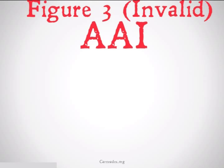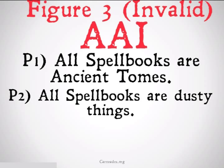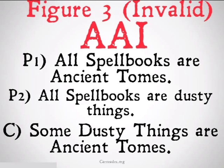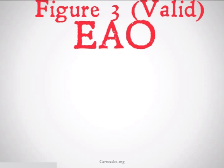An invalid version of AAI is: All spellbooks are ancient tomes. All spellbooks are dusty things. Therefore, some dusty things are ancient tomes. Why? Because real spellbooks don't exist.